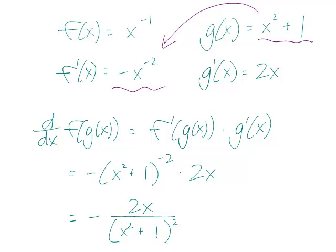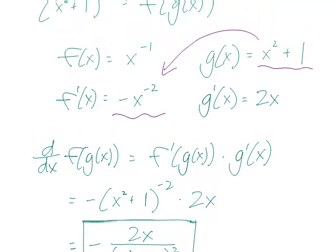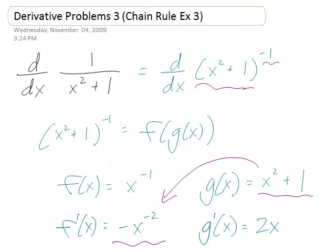And we can't really simplify this any further, so this is the answer. Minus 2x over x squared plus 1 quantity squared, or minus 2x times x squared plus 1 to the minus 2. And that's the derivative of the function 1 over x squared plus 1.